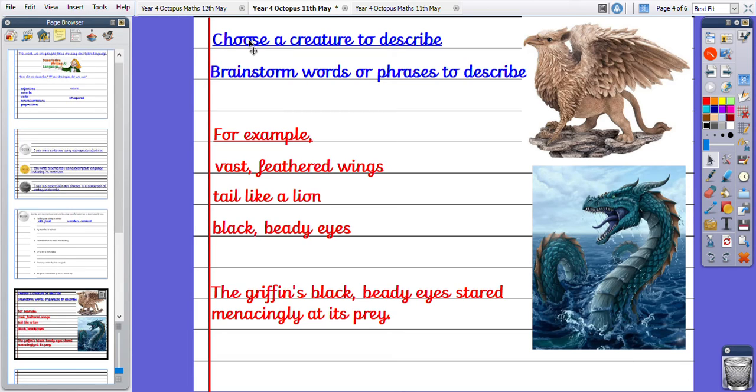So first things first, you need to choose a creature to describe. So it may be the griffin or it may be the sea serpent. And you're going to brainstorm words or phrases to describe them. So I've chosen the griffin and I've thought of vast feathered wings, a tail like a lion. Look, he's got a tail like a lion.